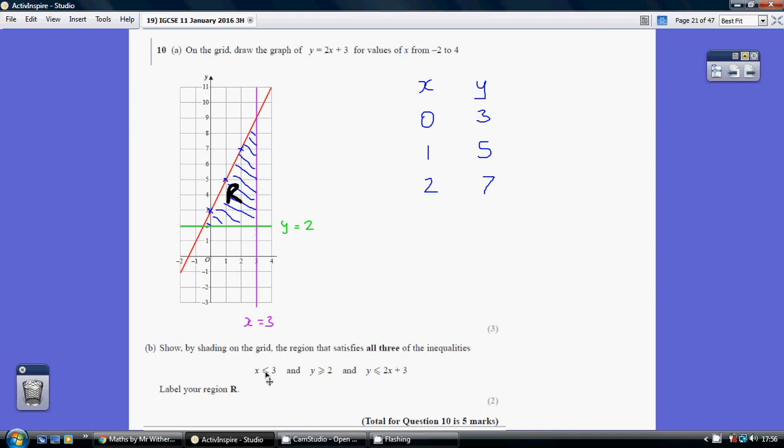So we're looking for the area where x is less than or equal to 3, y is greater than or equal to 2, and y is less than or equal to 2x plus 3. This is the bit in between. So it's this triangular area shaded which they've asked us to call R.